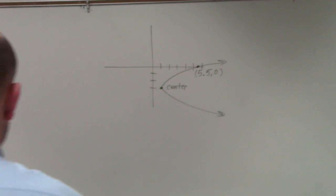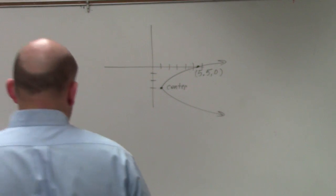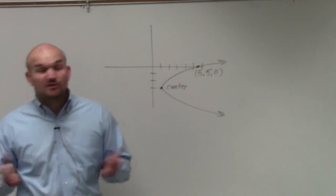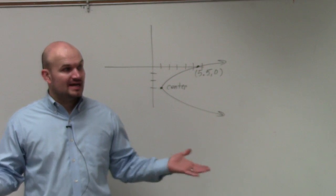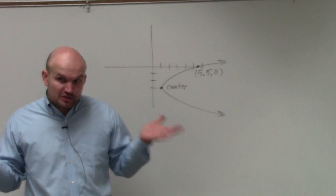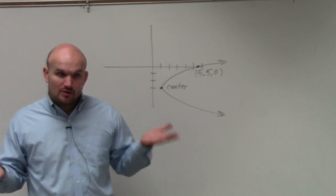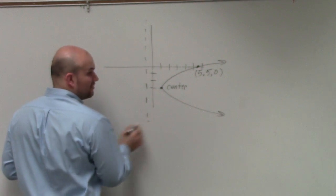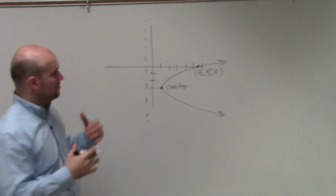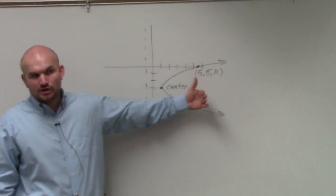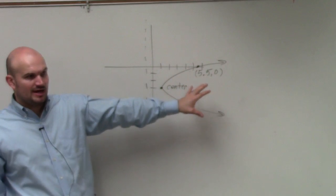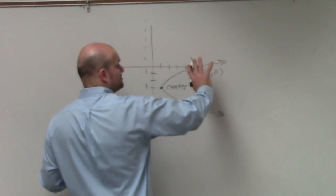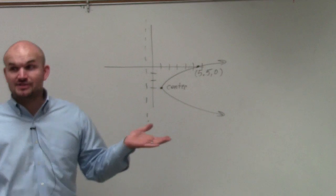When you're doing a problem like this, we want to identify what we don't know — we don't know where the center is, we don't know where the focus is, and we don't have that value of p. But there is one thing we do know: the directrix is going to be vertical. So when we have a directrix that's vertical and this parabola opens up to the right, which variable should be squared — the x or the y?